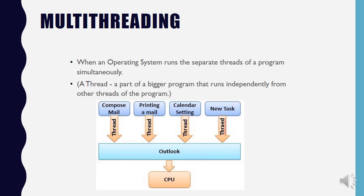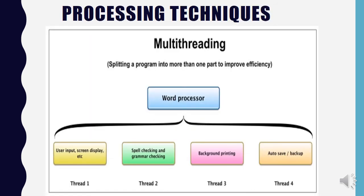The next special technique is multi-threading, where separate threads of a program run simultaneously. A good example is Outlook: one thread handles composing new emails, another handles printing, another manages calendar settings, and another handles new tasks. Similarly, in a word processor, while you're typing, there are threads running spell-checking, grammar-checking, auto-saving, and printing in the background — all four threads running simultaneously on your CPU.